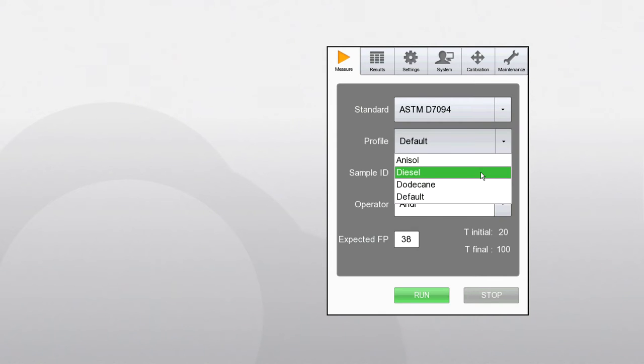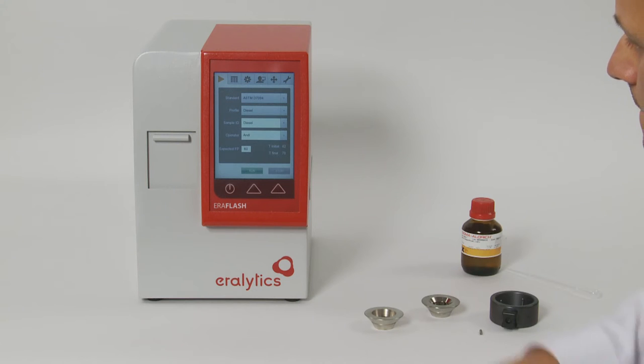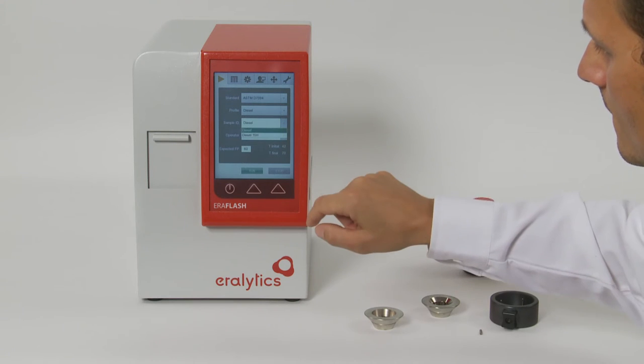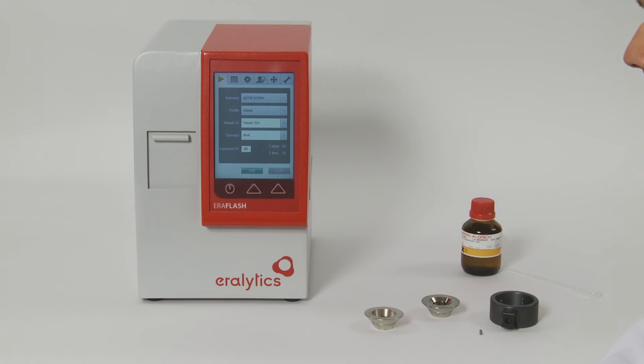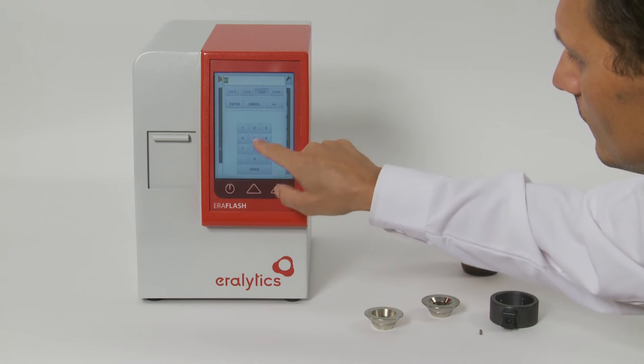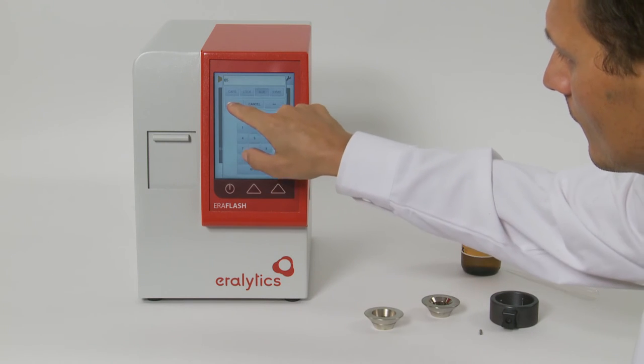A measuring profile allows the pre-selection of the sample IDs and the suitable measuring range. Detailed programming of the profile can be done in the settings menu. Enter the sample ID and the operator on the pop-up keyboard or select them from the drop-down list of previously entered names. If the preset expected flashpoint does not fit the test at hand, it can be adjusted as needed.